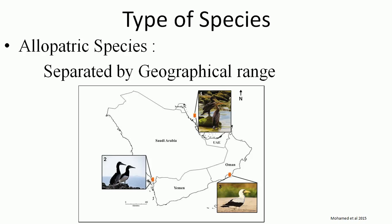A picture shows Saudi Arabia, Amman, Oman, and UAE — four countries. In those four countries, there is one species of bird in UAE, another species of bird in Saudi Arabia, and another species in Oman. These species are similar but they are allopatric species, because they are geographically separated by geographical range. Therefore, these are different species found in different regions.